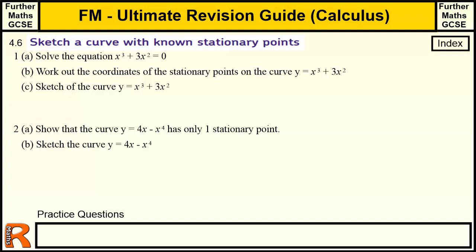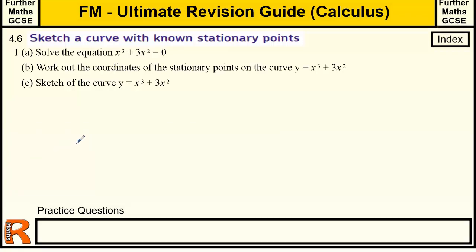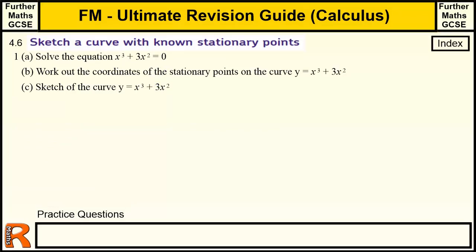So let's have a go at question 1. We've got to solve the equation where x³ + 3x² = 0. So part A, we've got to solve that. To solve that, first of all, we can factorize out an x², because x² goes into both of those. x²(x + 3) = 0. So x = 0 and x = -3 are the solutions. That's an algebra question, not really to do with this topic.